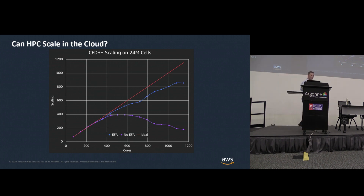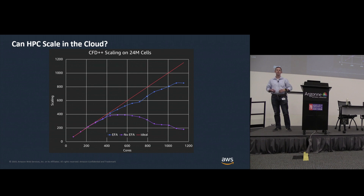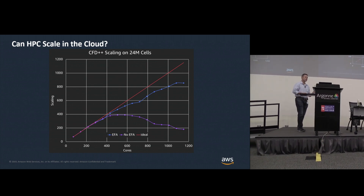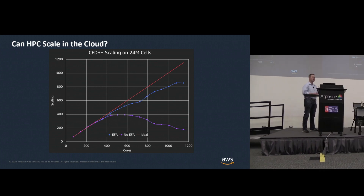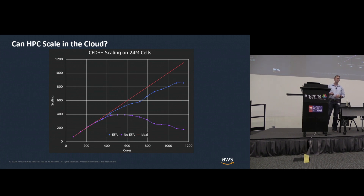The graph shows the ideal performance of that code versus our previous technology ENA — the elastic network adapter — which tapers off and doesn't really scale well, versus our newer technology EFA. We still have a bit of a plateau to work on above a thousand cores, but this is much closer to ideal, and we're running real HPC workloads at scale in the cloud.